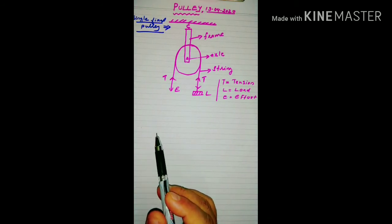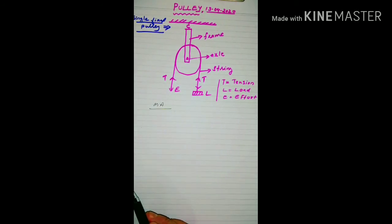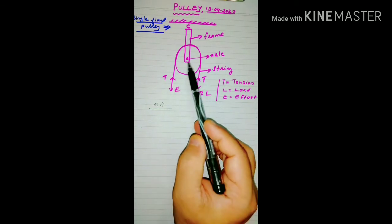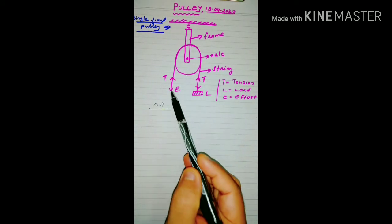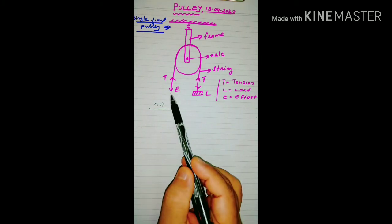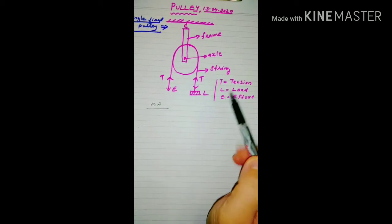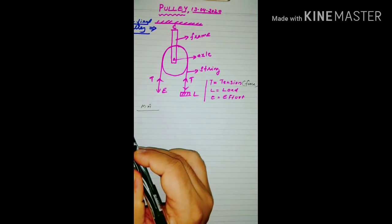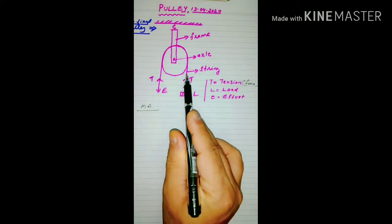What is the mechanical advantage, velocity ratio, and efficiency of a single fixed pulley? If we neglect the mass of the string and the friction of the axle, then in the balanced position — meaning the pulley is not rotating — the effort is balanced by the tension acting upward along the string. Tension is a force always acting upward along the string. The load is also balanced by the tension acting upward along the string.